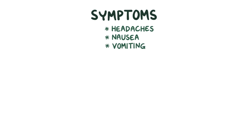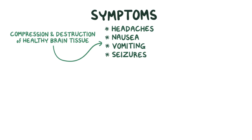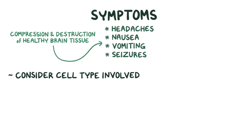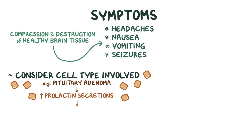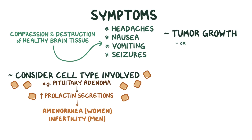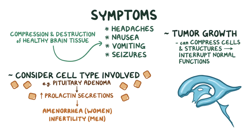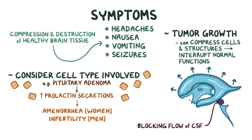The most common symptoms of brain tumors include headaches, nausea, vomiting, and seizures, and they're a result of the compression and destruction of healthy brain tissue. It's also important to consider the cell type involved — for example, a pituitary adenoma causing an increase in prolactin secretions may lead to amenorrhea in women and infertility in men. As the tumor grows in size, it can compress nearby cells and structures, interrupting their normal functions. For example, as pinealomas, medulloblastomas, and ependymomas enlarge, the tumor mass can compress nearby ventricles, blocking the flow of cerebrospinal fluid, which causes swelling called hydrocephalus.